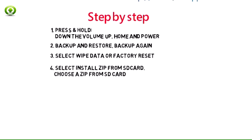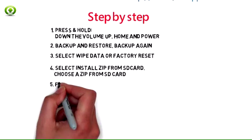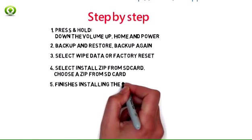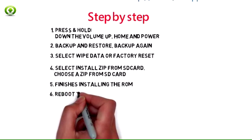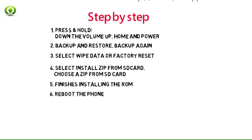4. Next, select Install Zip from SD card, then choose a Zip from SD card. Locate the AICP Android 6.0.1 custom ROM and select it by pressing the Power button. Confirm installation by selecting Yes. The ROM installation will now begin. 5. Once the phone finishes installing the ROM, repeat the above step to install GApps on your Samsung Galaxy S5.